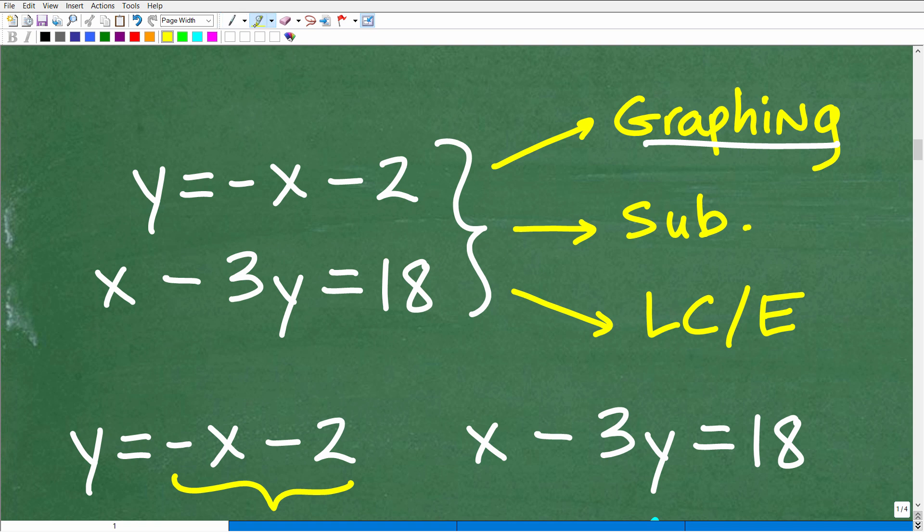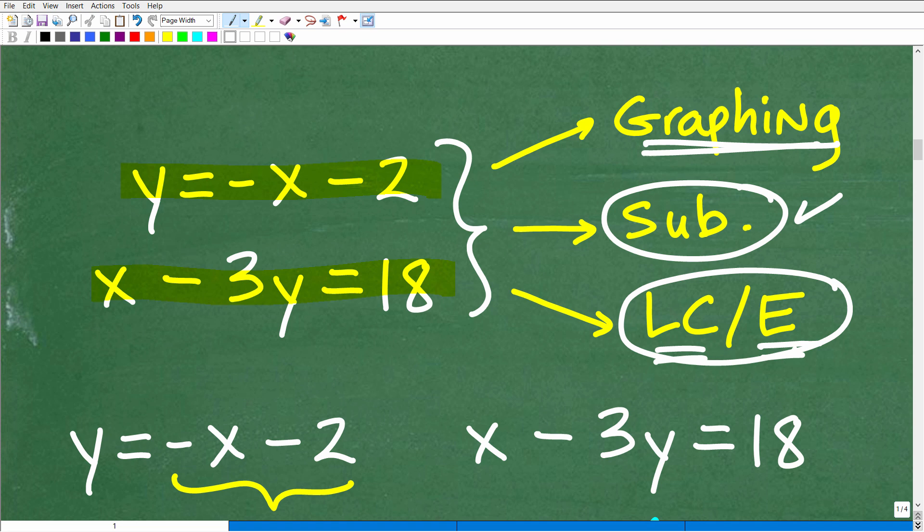The first is called the graphing method, where, effectively, you actually graph this line and you graph this line on graph paper. And you'll look and see where the point of intersection is at. Now, that's assuming these two lines, in fact, do cross. Not all systems are going to have a solution. That's a whole other different topic. But anyways, you have this graphing method. Now, this is kind of a basic method, but it's not really a practical method. So you want to use two algebraic methods. The first being the substitution method, and the second being the elimination or linear combination method. They're just basically the same thing. They go by two different names.